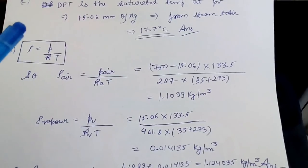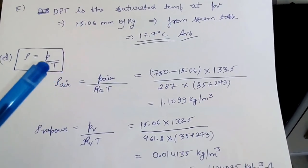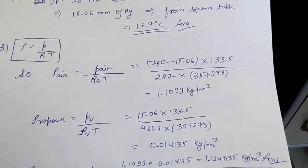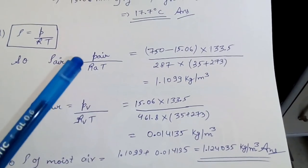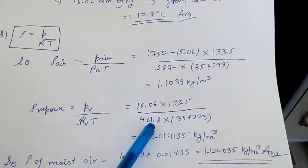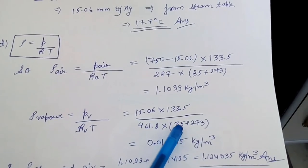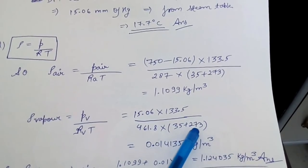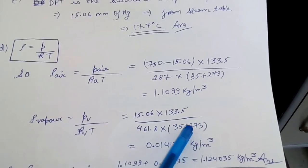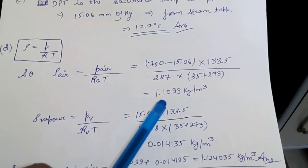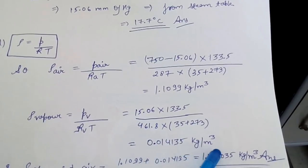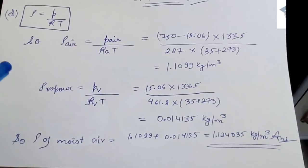Density of moist air = density of dry air + density of vapor = 1.1099 + 0.014135 kg/m³. Remember to write the unit kg/m³.